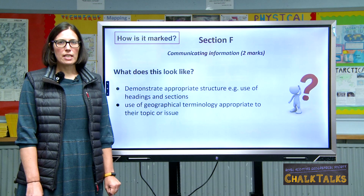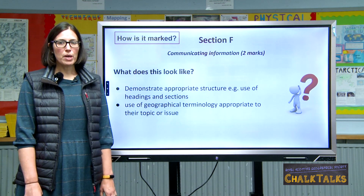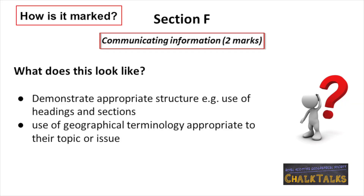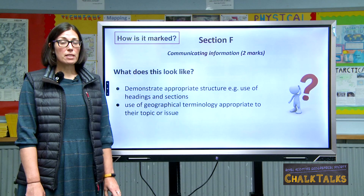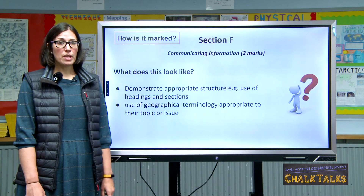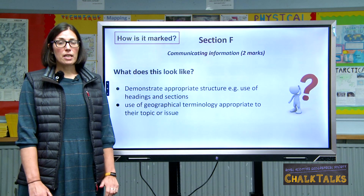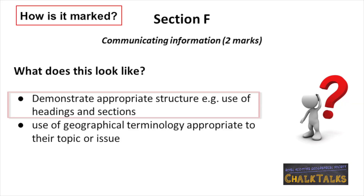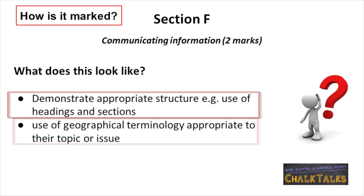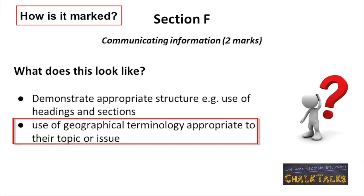The final section, Section F, is also worth two marks and is about communicating information. These marks can be awarded anywhere within the write-up and are linked to the structure of your write-up — for example, your use of a title and your use of subheadings. You can also be credited marks for the appropriate use of geographical terminology.